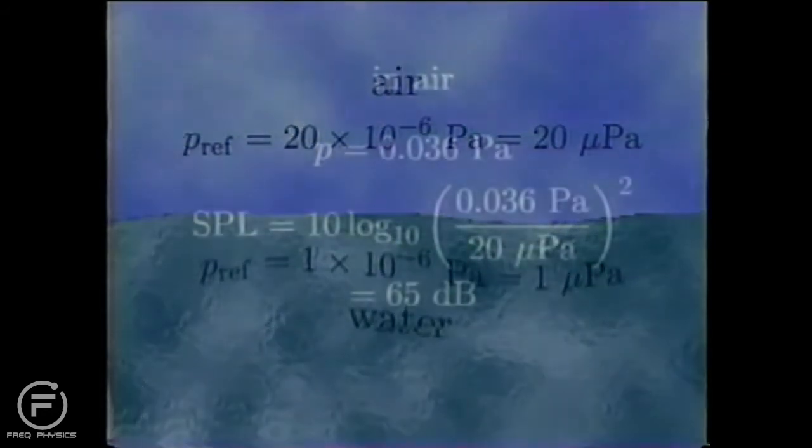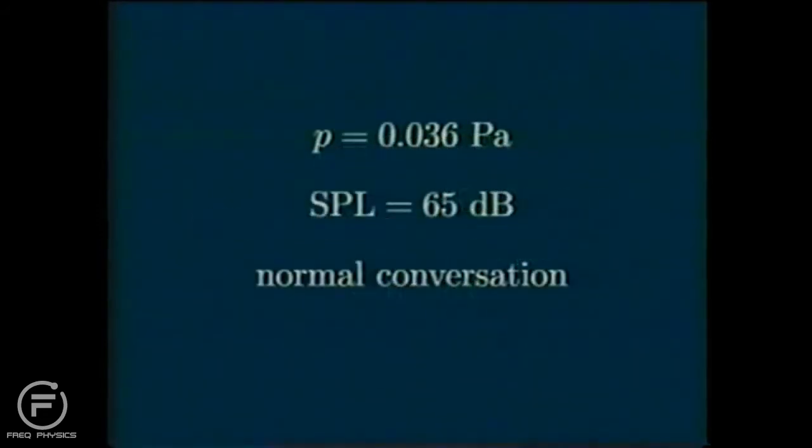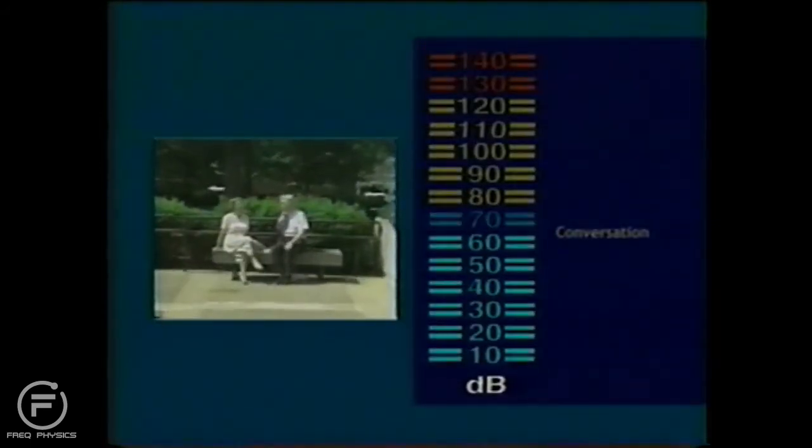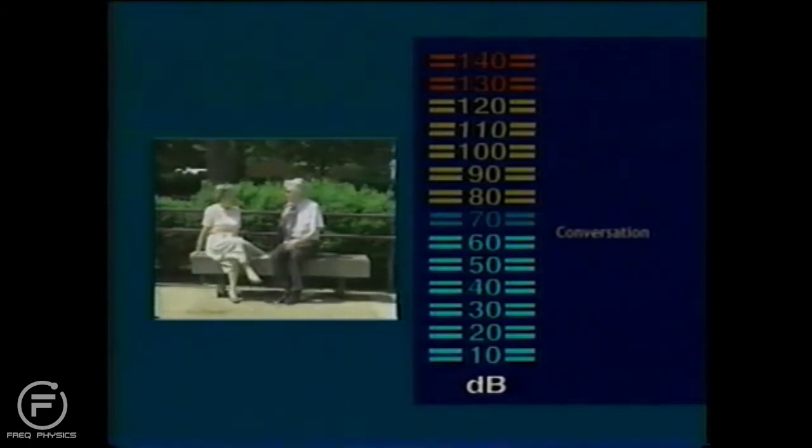To get an idea of how pressure and sound pressure level relate, here's an example calculation where air is the supporting medium. We have an acoustic pressure level of 0.036 pascals. The sound pressure level is then calculated to be about 65 decibels. This is the approximate sound pressure level for normal conversation.